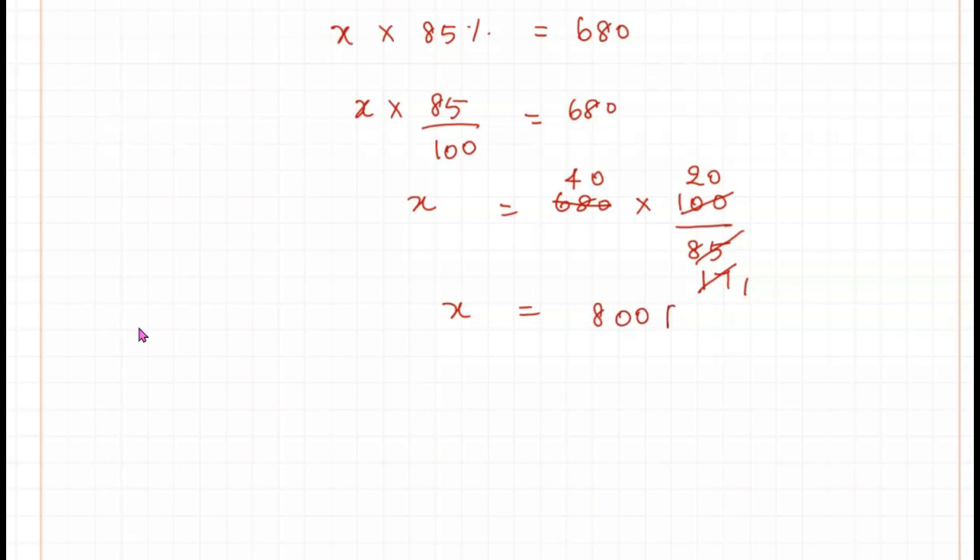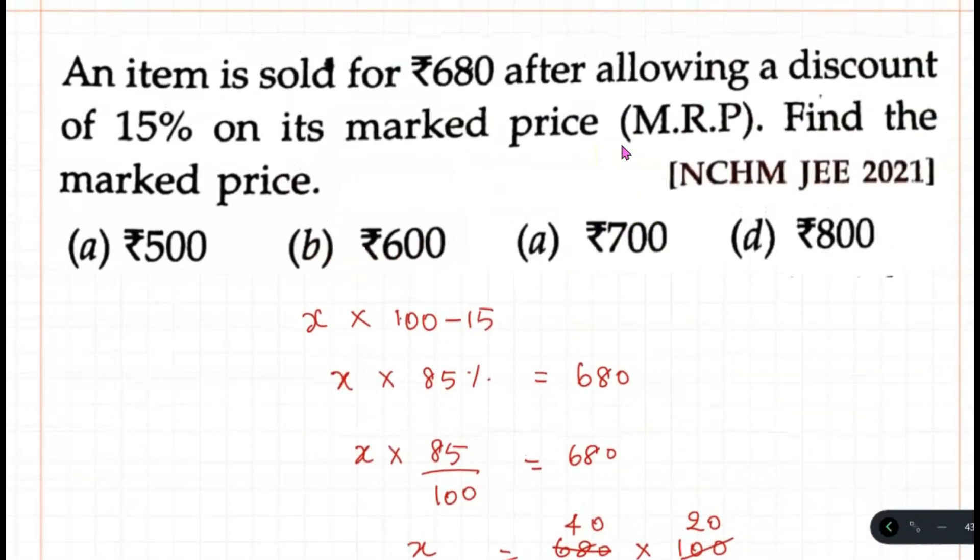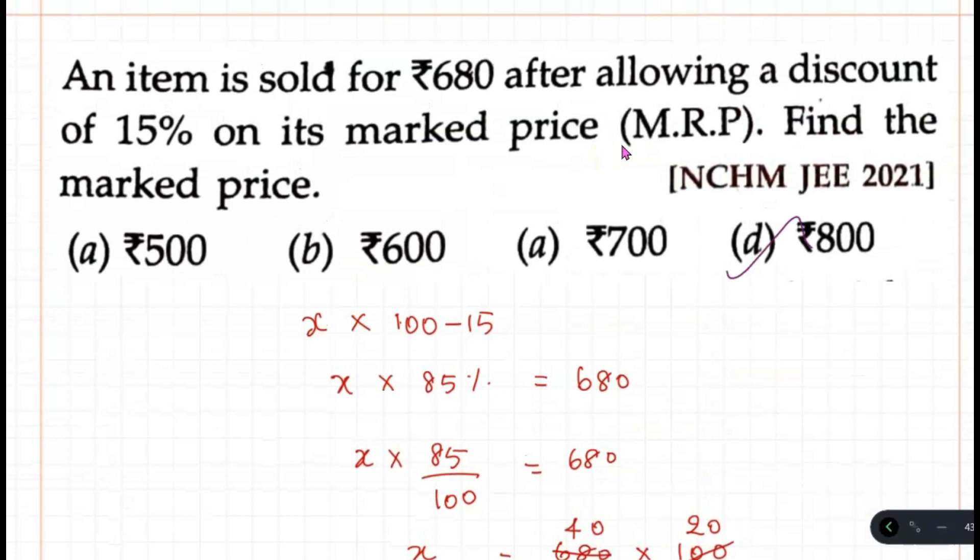So X equals 800 rupees, which is the initial price. When a discount of 15% is applied, it becomes 680 rupees. So the MRP here is 800 rupees.